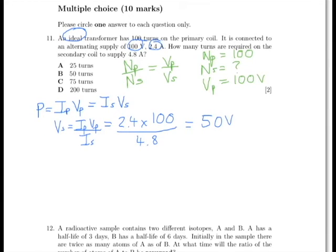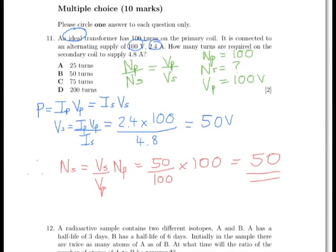Therefore, we can now rearrange our original equation to get the number of turns on the secondary equals the voltage on the secondary divided by the voltage on the primary, multiplied by the number of turns on the primary. This gives us 50 over 100 multiplied by 100. Therefore, the number of turns required is 50, which is answer B.